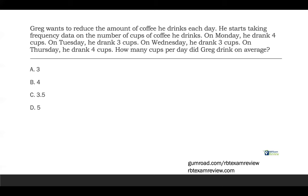Greg needs to find the average amount of coffee he drinks per week in order to decrease that number. He took frequency data on the cups. So how do we find an average? We just add up all of our data points — all of the data — take the total and then divide it by the number of data points. So we take four plus four is eight, eight plus three is eleven, eleven plus three is fourteen.